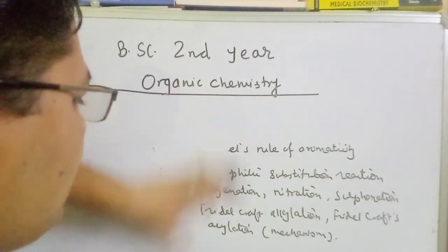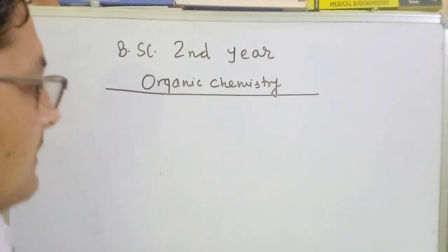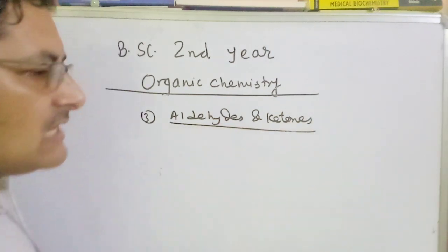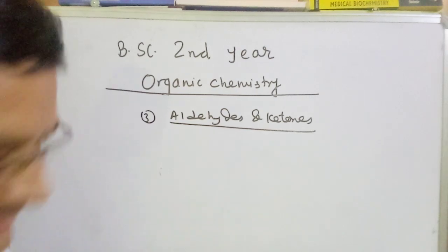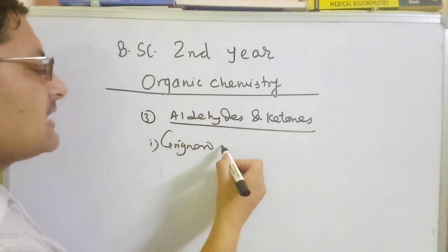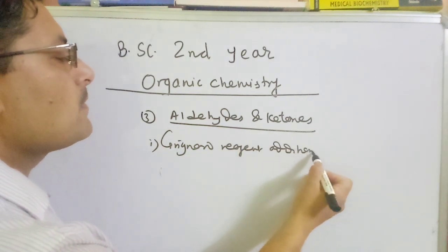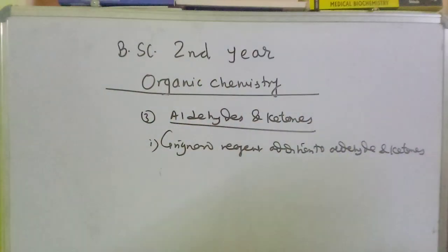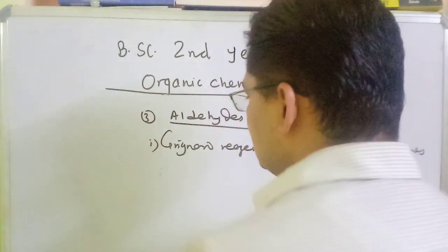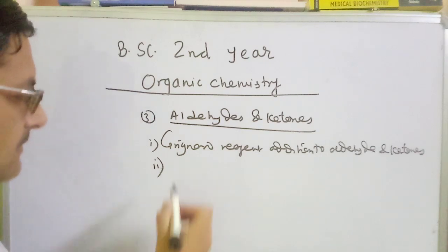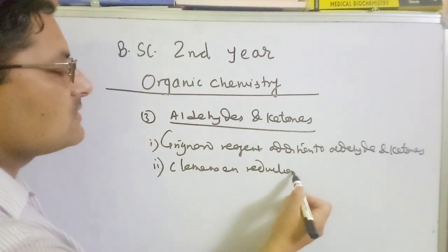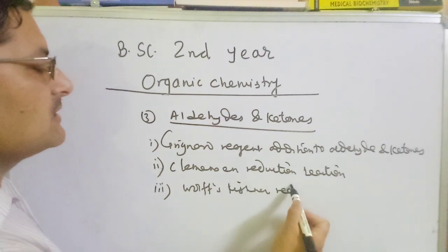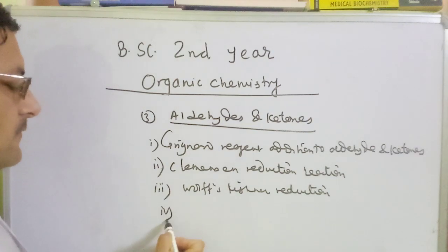This is the second chapter. In the third chapter, we will talk about aldehydes and ketones. Aldehydes and ketones are important — the topic of carbonyl compounds. We will talk about Grignard reagent addition to aldehydes and ketones. We will discuss reactions of aldehydes and ketones. Number 1 is the Clemmensen reduction reaction.